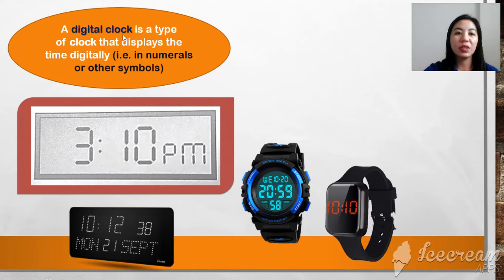A digital clock is a type of clock that displays the time digitally, for example, in numerals or other symbols. So this is the example of numerals, 3:10 PM. Numerals number. This is the example of a digital clock.